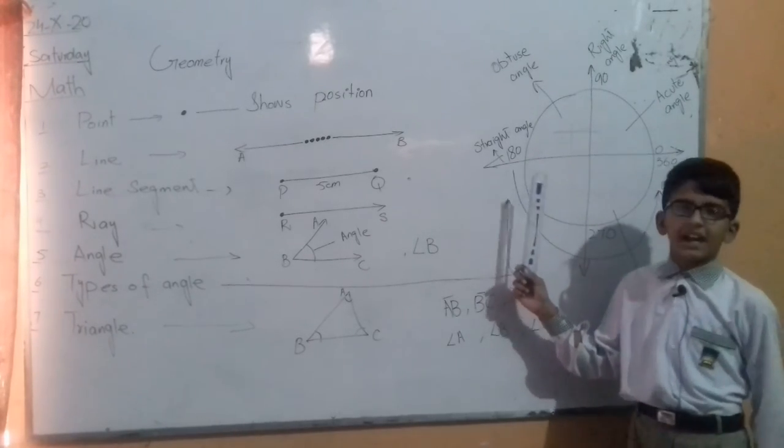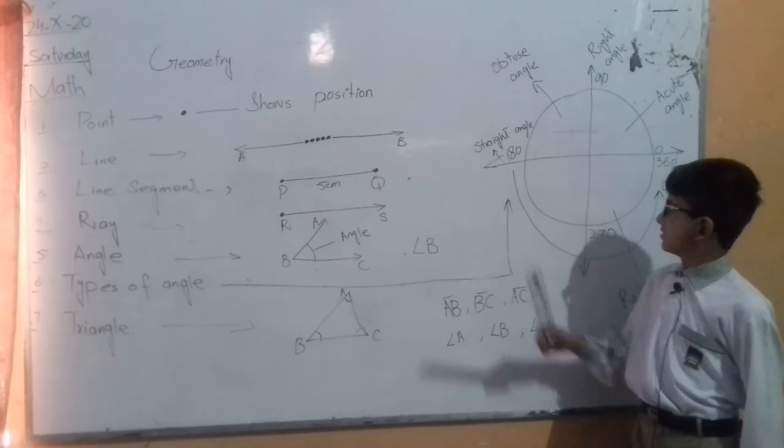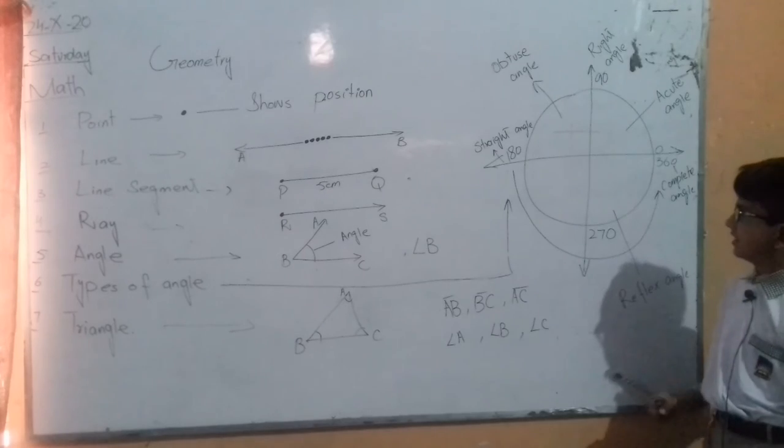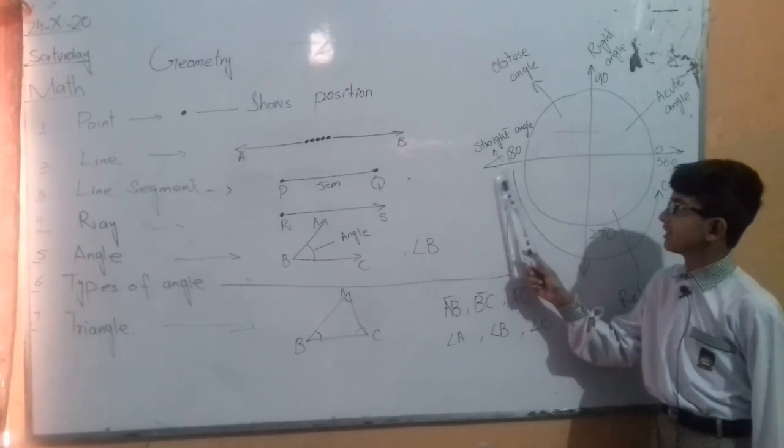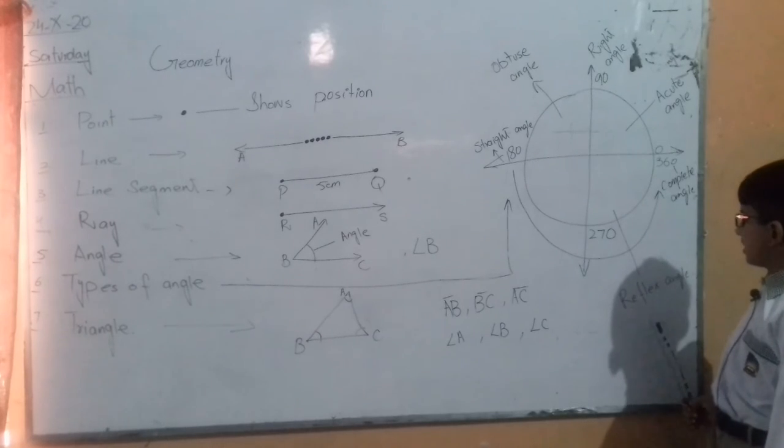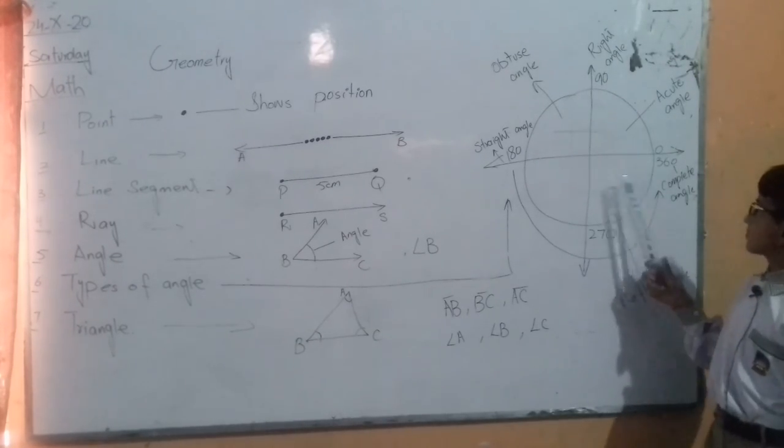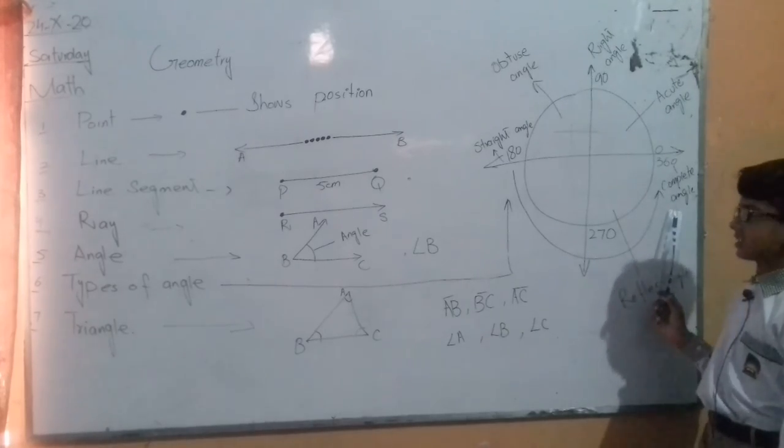Straight angle. The angle of 180 degrees is called straight angle. Reflex angle. The angle greater than 180 degrees and less than 360 degrees is called reflex angle. The angle of 360 degrees is called complete angle.